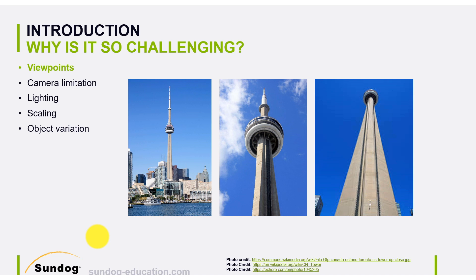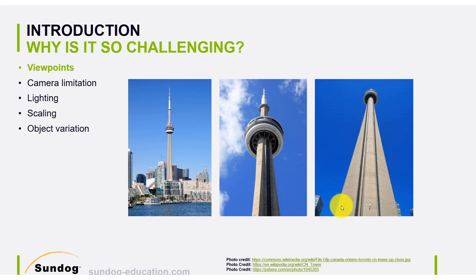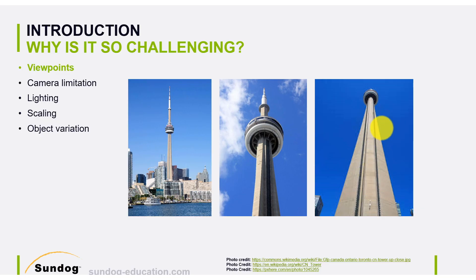Let's look at some specific challenges in more depth. The first is viewpoints. Here is an image of the CN Tower in Toronto from far away — we can recognize it easily. However, if we go underneath the CN Tower and look up, or get a bit closer and get a different angle, the images look very different. These are all the same object, but it's very difficult for a computer to generalize across different viewpoints.